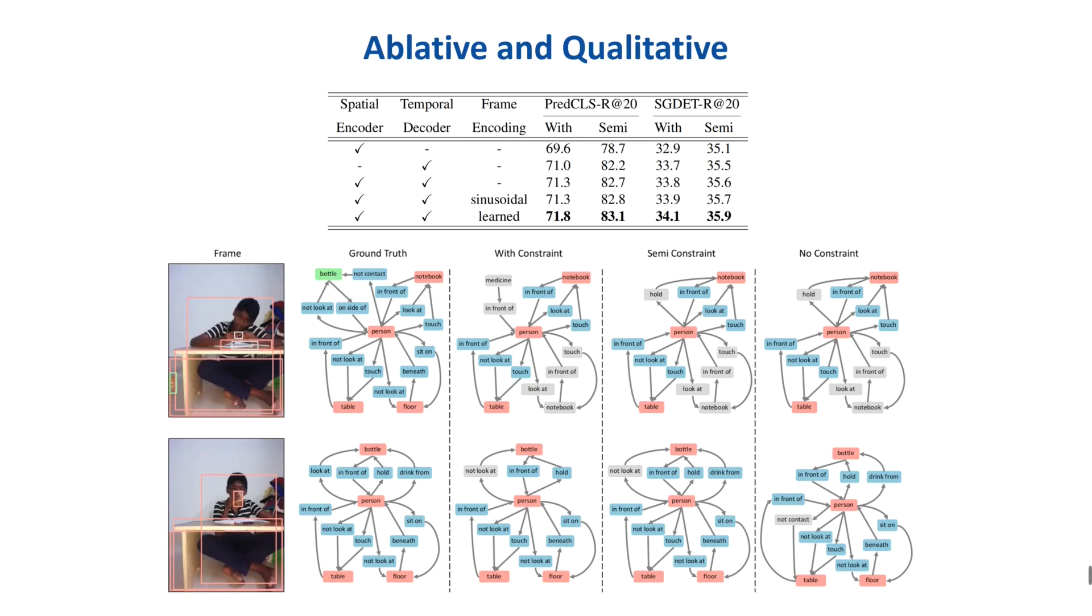We ablate different components of Spatial Temporal Transformer to clarify how these modules contribute to the performance. When only the spatial encoder is enabled, the model works the same as the image-based method and also has similar performance as RelDN.